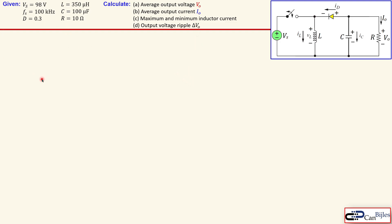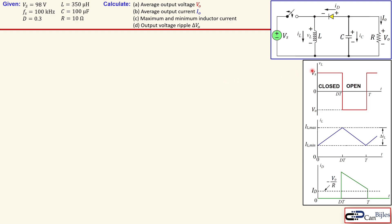Before we dive into the calculations, let's first look at the waveforms. The first one is the inductor voltage shown in red. The inductor voltage is VS when the switch is closed from 0 to DT. From DT to the end of period T, the switch is open and the diode is in forward bias mode, so the inductor voltage equals the load voltage or output voltage. Why this is negative will be explained when we analyze the volt-second balance.